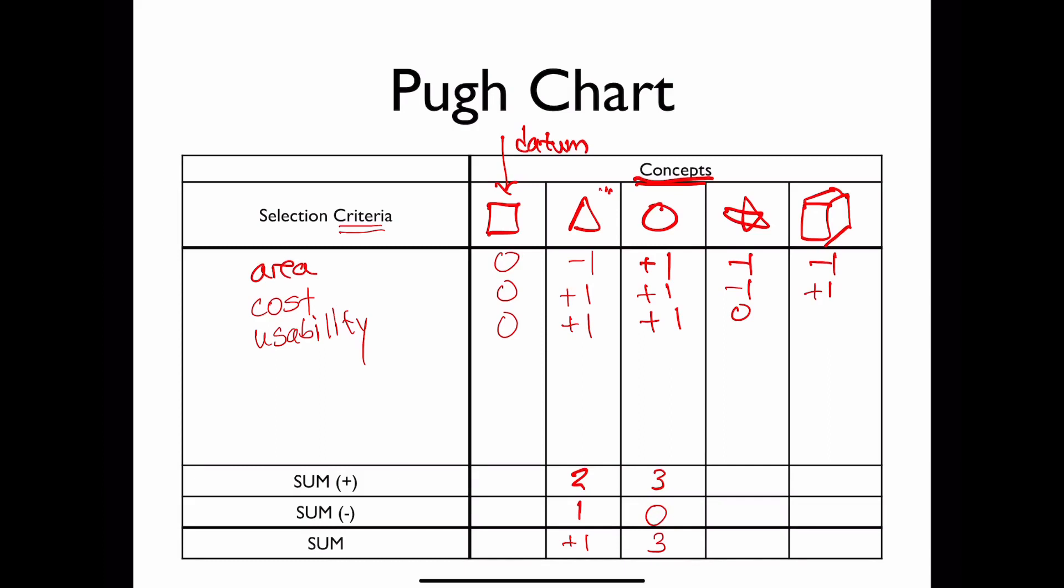And so for our star concept, it had one neutral aspect, but no positive aspects, so that would have a score of negative two. And then for our box over here, it had one positive, two negative, so a score of negative one.